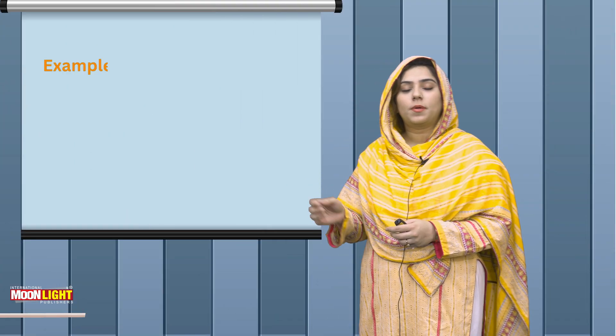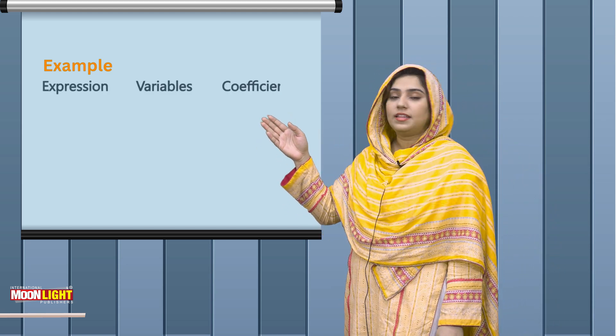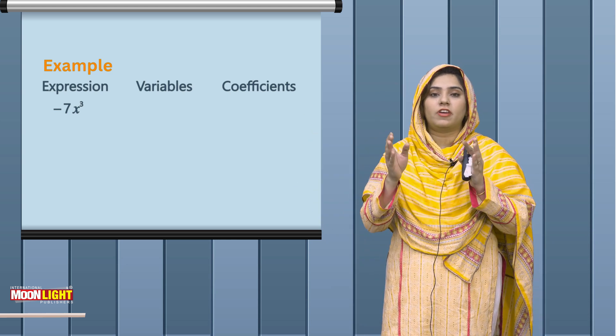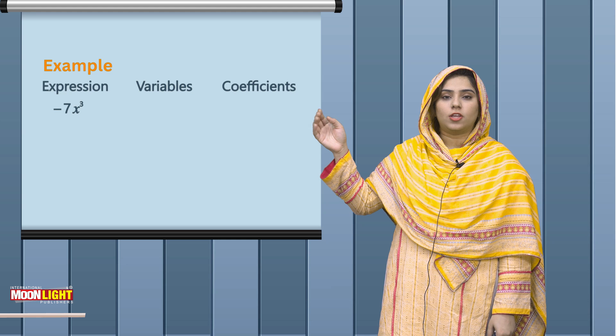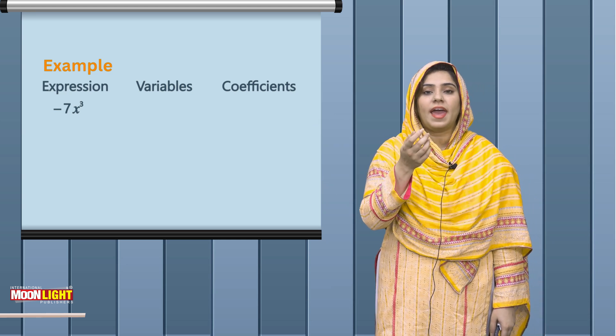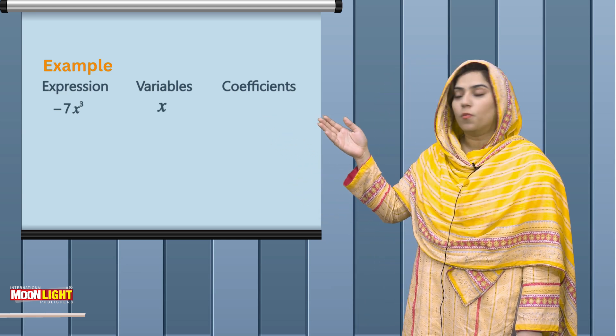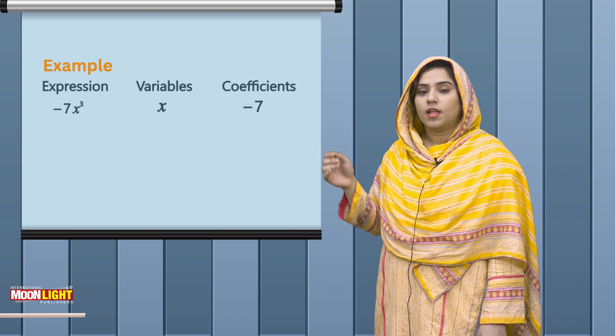Now students, you have some examples, some expressions that are minus 7x cube. Let me identify the variables and coefficients. If I talk about variable, then I have a variable - x is a variable in minus 7x cube. This means that the coefficient is minus 7.